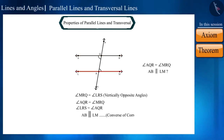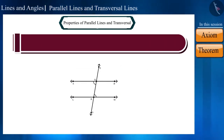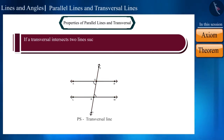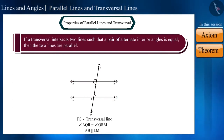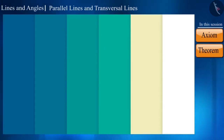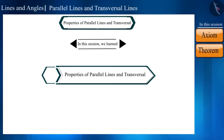Using the converse of corresponding angles axiom, we can prove that lines AB and LM are parallel lines. We can write this result also in the form of a theorem: if a transversal intersects two lines such that a pair of alternate interior angles is equal, then the two lines are parallel. That's all for this session — today we discussed the properties of parallel lines and transversal. See you in the next video, thank you.